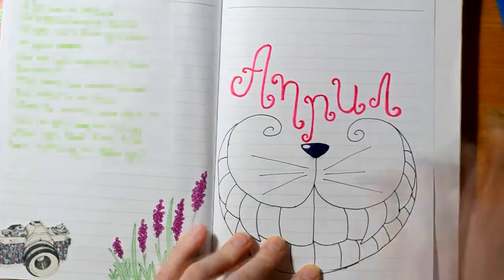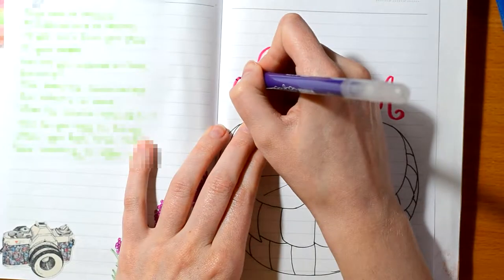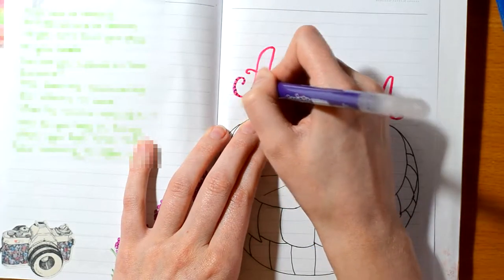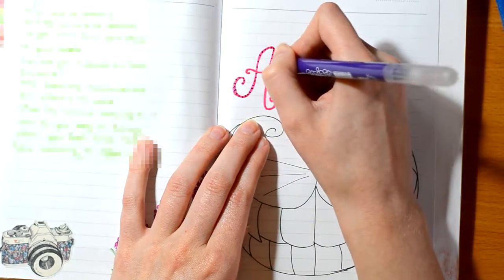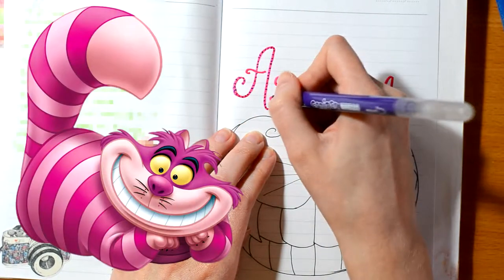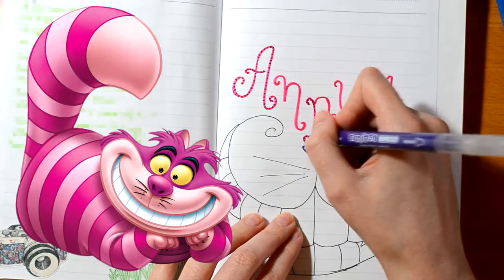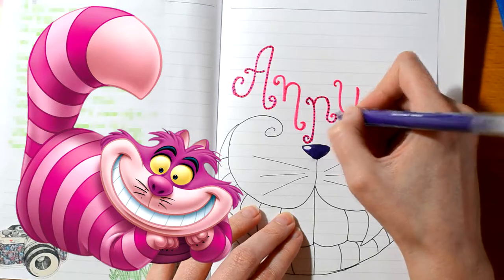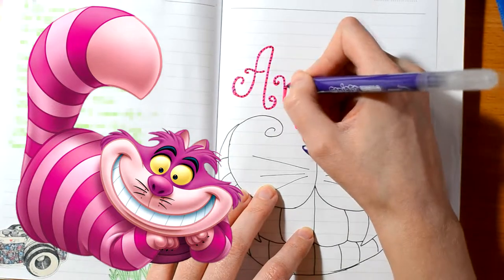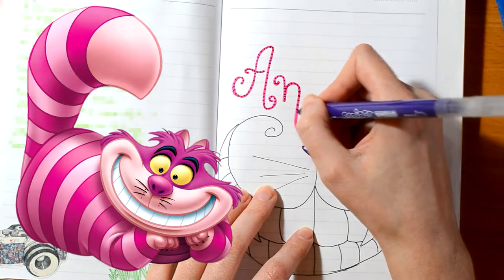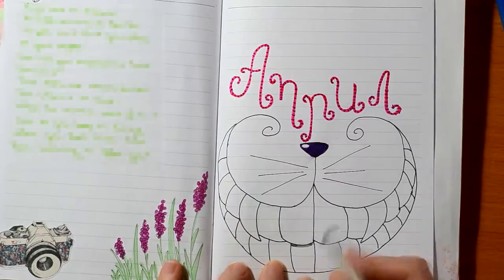Anyway, I only drew the mouth with the whiskers and the little nose, and I think it turned out really cute. For the header I added some stripes because if I remember correctly, in the animation the cat had purple with pink stripes or something like that.